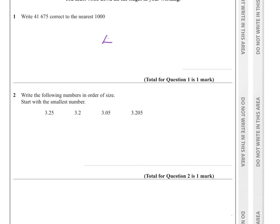Question 1. We've got to write 41,675 to the nearest 1,000. So here we have our units, our tens, our hundreds, and then thousands. If we look at this number here, as it's a 5, a 6, a 7, an 8, or a 9, it would round this number up. So in the thousands column, we would have 2 instead of 1. So to the nearest 1,000, the answer would be 42,000.